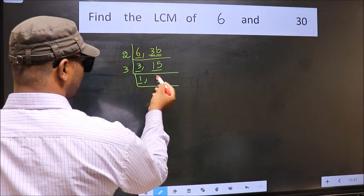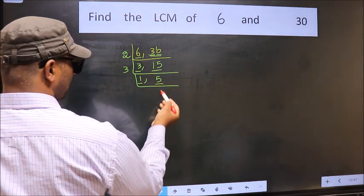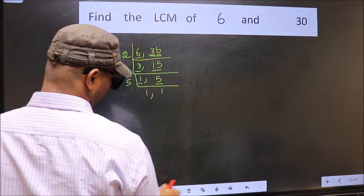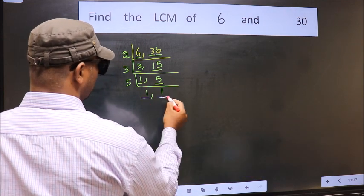Now we got 1 here so focus on the other number 5. 5 is a prime number so 5 times 1 is 5. We got 1 in both the places.